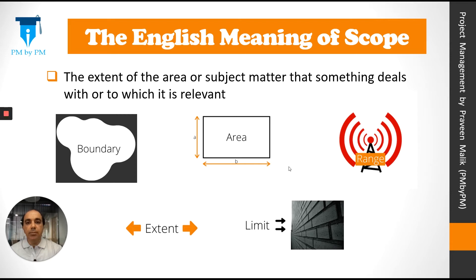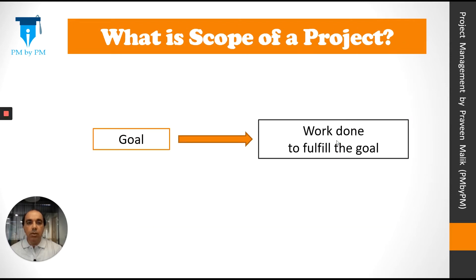For example, boundary means that within this boundary we are going to work; outside this boundary we will not work. So what is scope of a project? A project starts with a goal and then work is done to fulfill that goal. The project scope is the work done to complete a project.